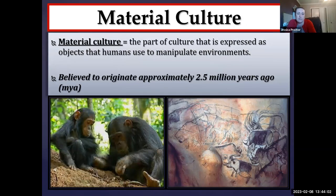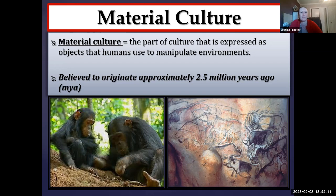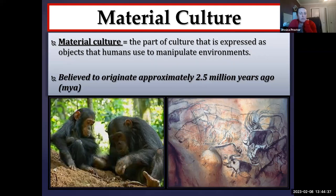Material culture is the part of culture that is expressed as objects that humans utilize to manipulate their environment to enhance survival and reproduction. Material culture was once thought to be uniquely human, but we certainly know now through primatology studies that many other species — chimpanzees, macaques, capuchin monkeys, and even species that aren't primates — are very capable of utilizing material culture. We do see evidence for an increased reliance upon stone tool technology originating about 2.5 million years ago, and we'll talk about that in more detail when we get into the human fossil record.